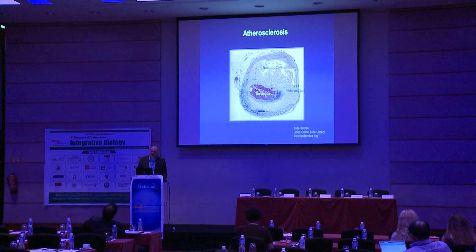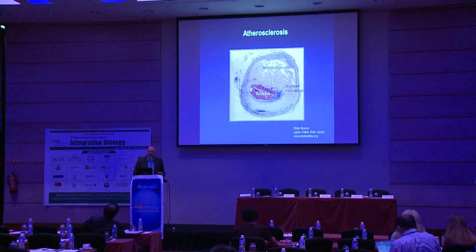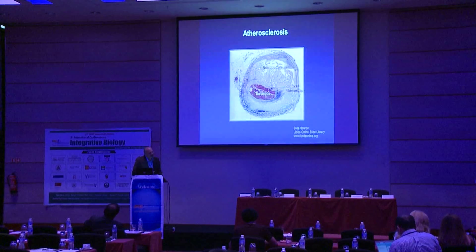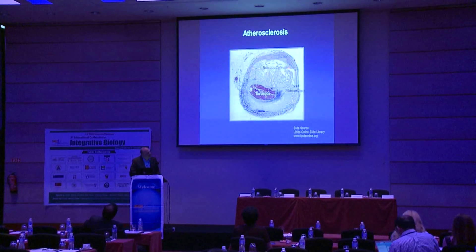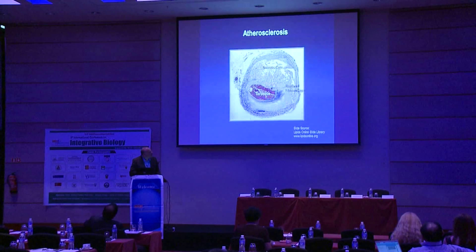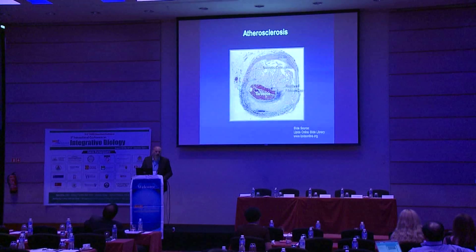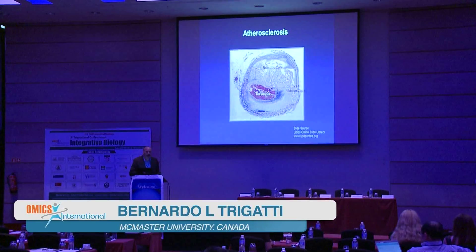Atherosclerosis is a pathological thickening of the walls of medium and large arteries that is a major cause of cardiovascular disease — heart attacks and strokes. This is an image of an atherosclerotic coronary artery from a human. This is the normal thickness of the artery wall, and as you can see in this section, the artery wall is severely thickened such that the lumen of the artery is only about 20% of the normal size.